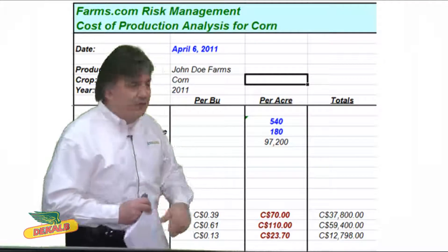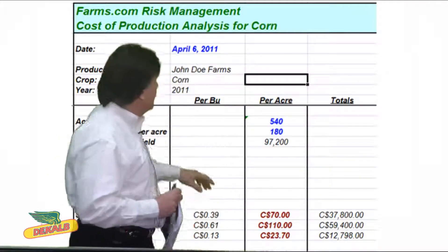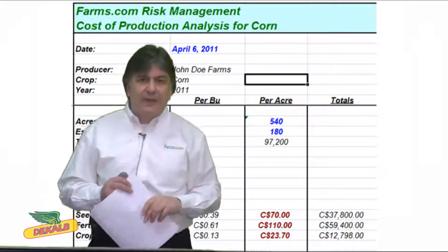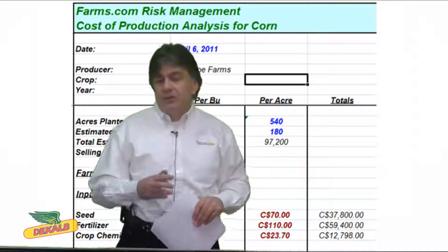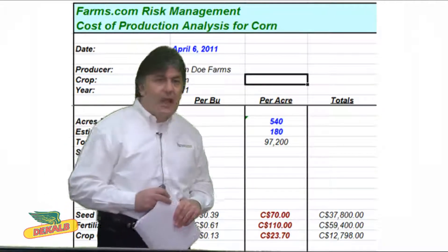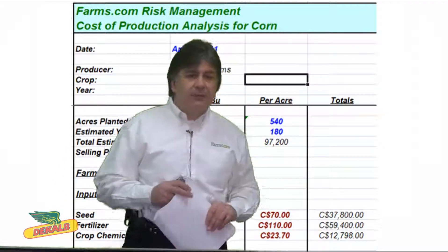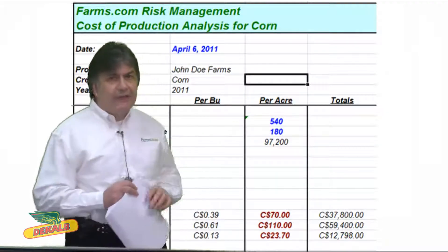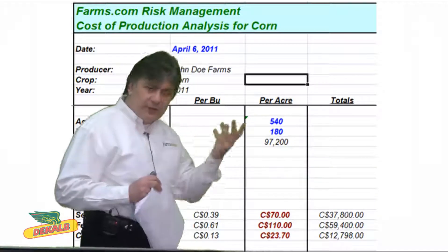In this example I'm using 540 acres to plant. I'm going to assume a yield of 180 bushels per acre. You can use your guaranteed bushel yield, revenue insurance bushel yield, an average, or a high yield. A 180 bushel yield would be a pretty high yield in any given year, whether you're in Western Canada, Ontario, or the United States, although the US can produce some higher yields.